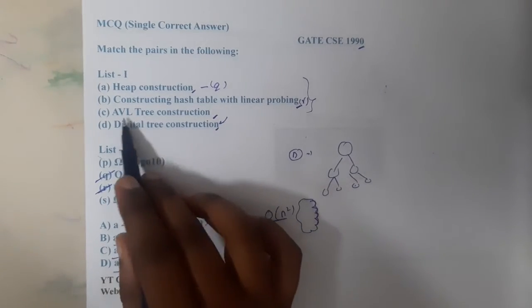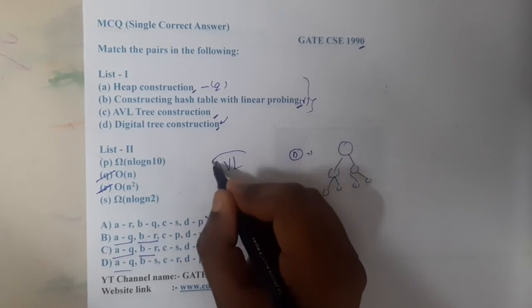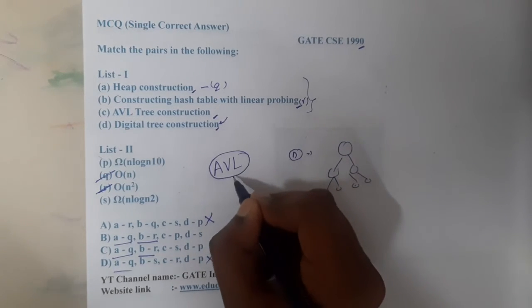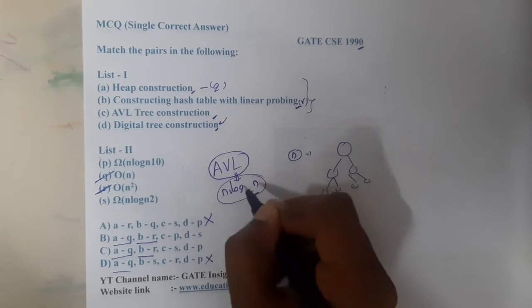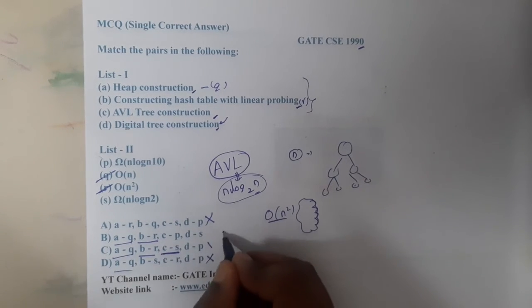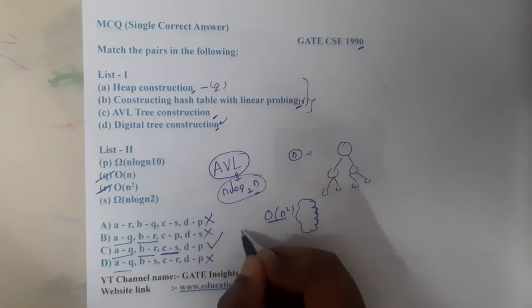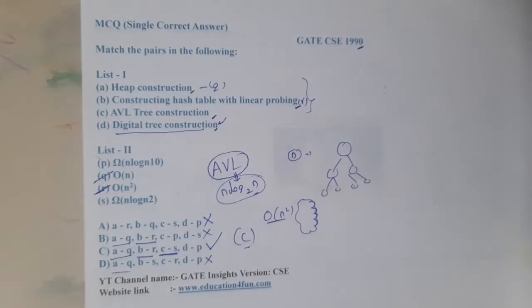Moving on to AVL tree construction. If you recall, AVL tree is a complete balanced tree. For AVL tree construction it will cost n log base 2 n, that is nothing but S. So only one option is there, with that you can say C is the correct answer. I did not even try to understand what is digital tree construction.